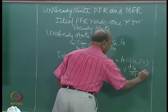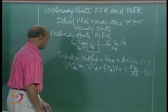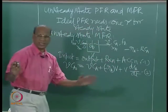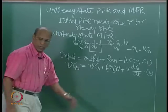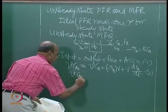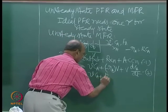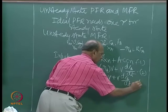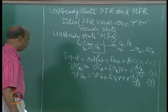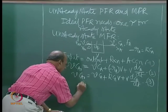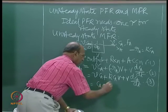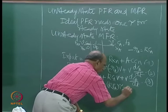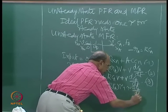I have first order reaction, so minus R_A equals K into C_A — liquid phase reaction. Substituting and rearranging gives equation 3: V·C_A naught = V·C_A + K·C_A·V + V·dC_A/dt. Dividing the whole thing by volumetric flow rate gives it in terms of tau — equation 4: C_A naught = C_A + K·C_A·tau + tau·dC_A/dT.